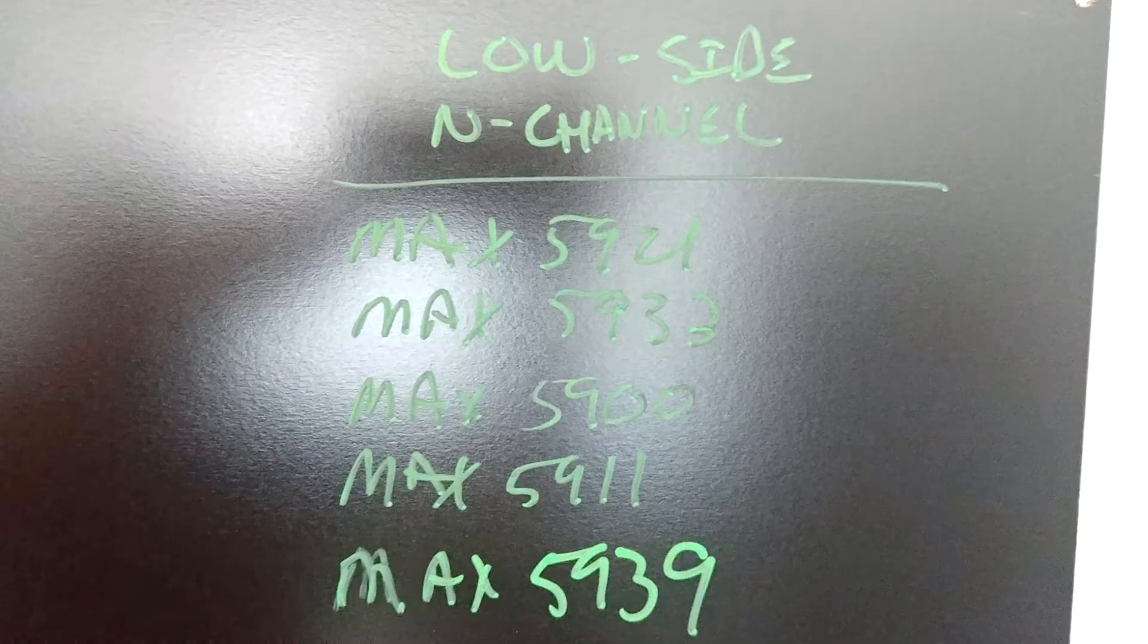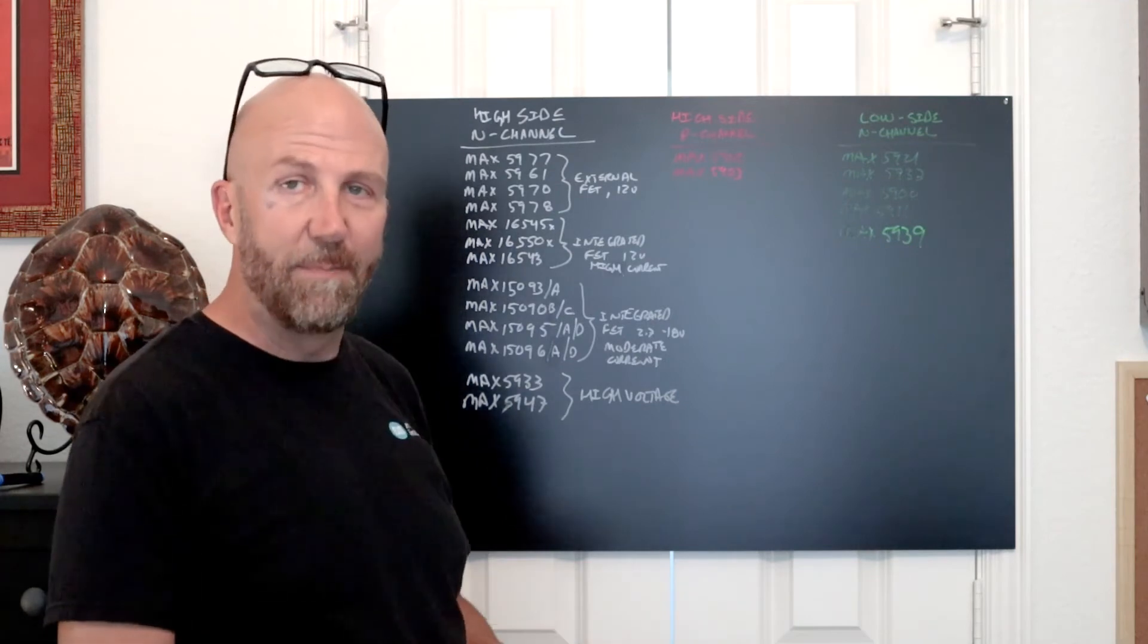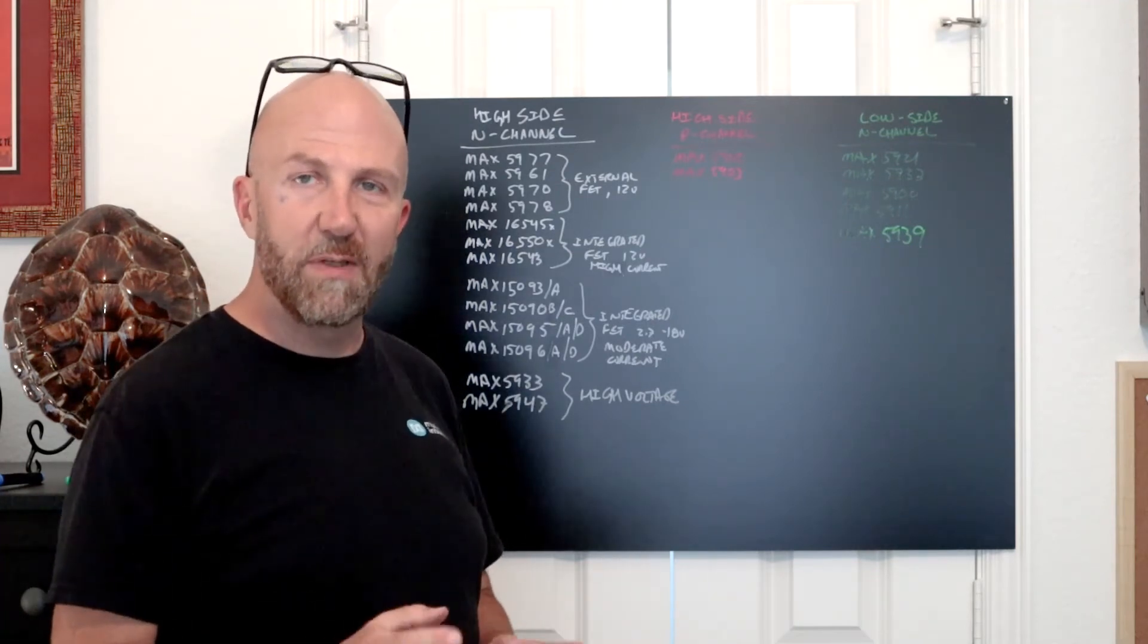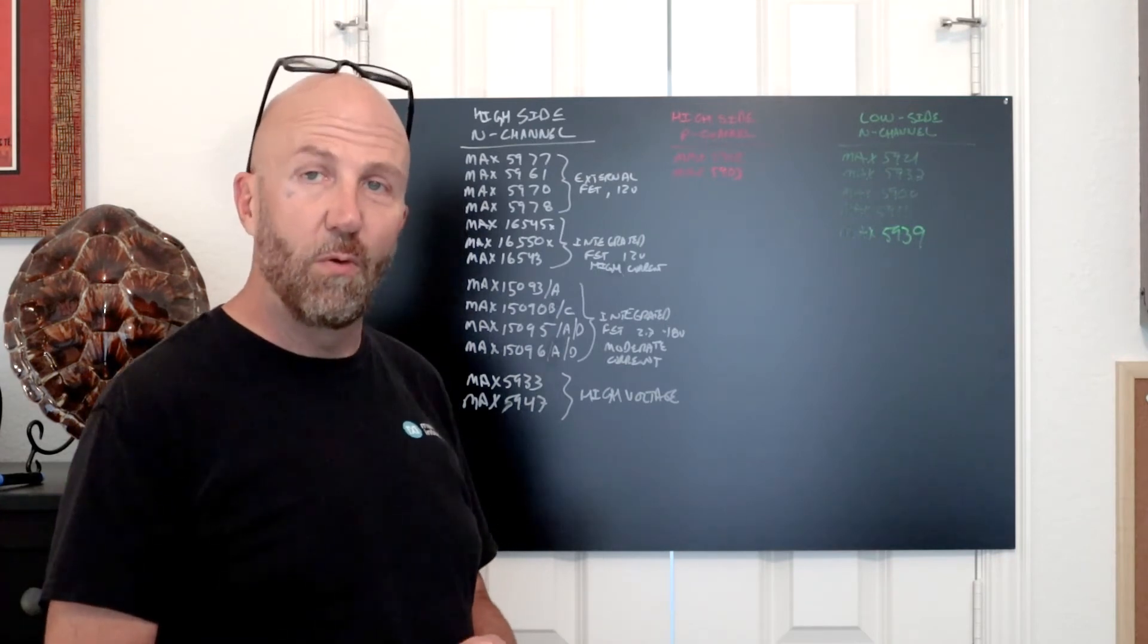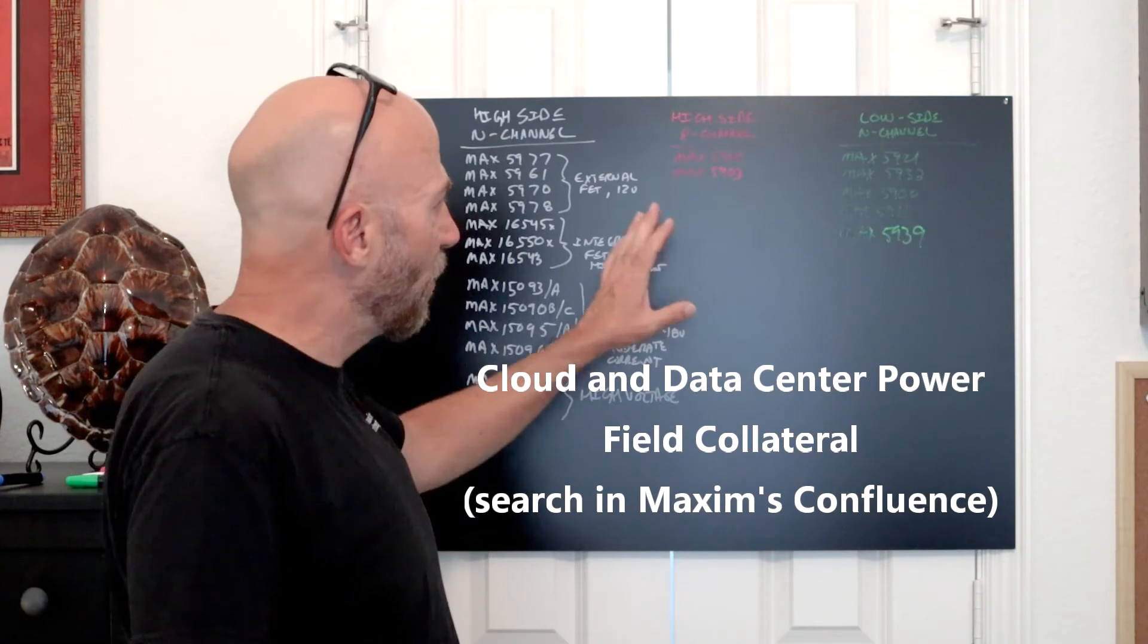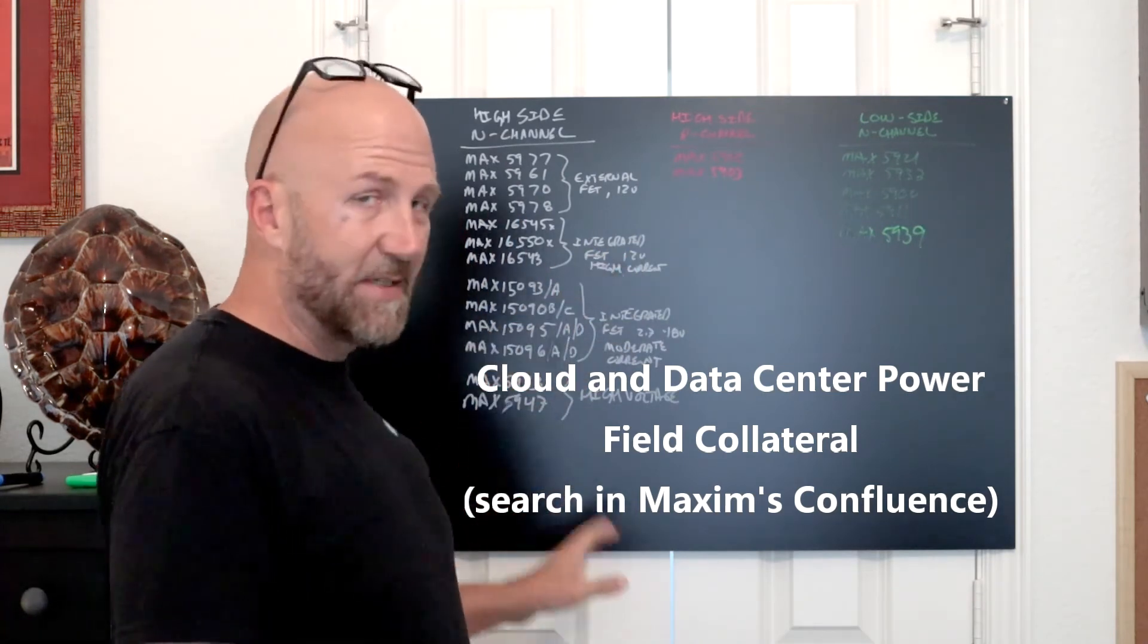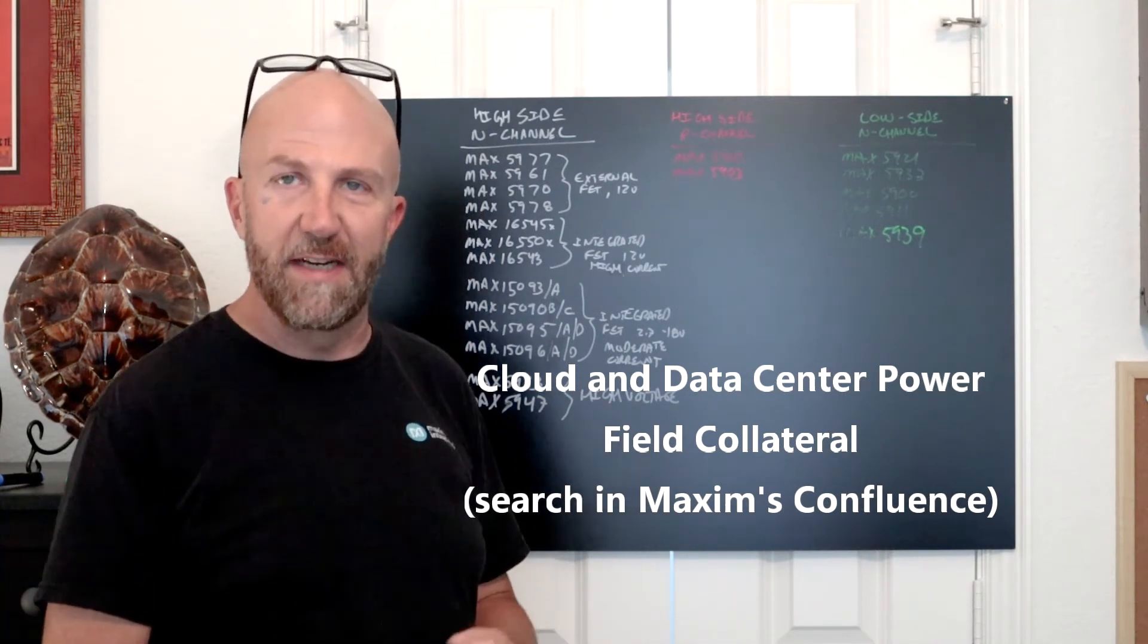Again, these are not comprehensive lists—there are other parts. These are just key parts you're going to see. If you want to see the full range, please go to the parametric search under Maxim's hot swap products, or go to the cloud data center power tool collateral site where we have the newest ICs listed in an organized way with all their support materials and documentation.